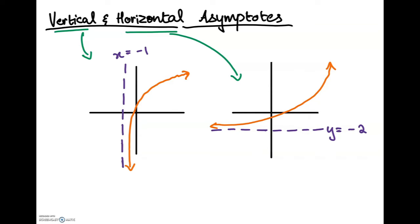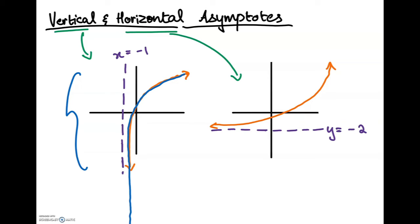On the left over here, this graph, we have an example of a vertical asymptote. The line in purple — it's dashed because it is imaginary — it's the line x equals negative 1. As you can see, this imaginary line is kind of against this graph. The graph goes really close to that dashed line, but it will never touch it. It will continue on and on, gradually getting closer and closer to that line, but it will never touch. That's because that line is the vertical asymptote where the graph will never pass.